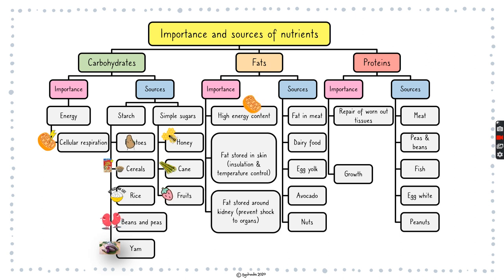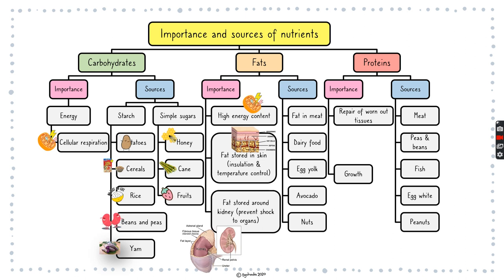Fat is also important for energy and actually has a higher energy content than carbohydrates. Fat is stored in the skin to provide insulation, and also stored around the kidney and major organs to prevent shock — for example, if you were to fall, the fat surrounding the organs acts like a cushion to absorb the impact. Some sources of fat: meat, dairy food, egg yolk, avocado, and nuts.